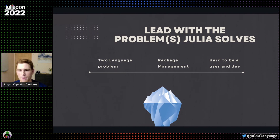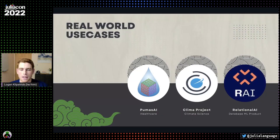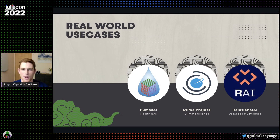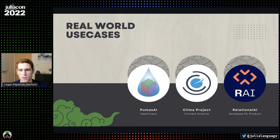Another point that comes up in conversations in the Julia ecosystem all the time is the blurred lines between being a developer and a user. Another piece of this is making things concrete with real-world use cases. I love to bring up real companies or projects that are solving real problems — in the case of the Klima project, which is part of Caltech and MIT and a few other organizations. This is a great way to solidify in people's minds that this is real stuff that's happening and these are real problems being solved — like Puma AI with healthcare, and Klima with climate science.